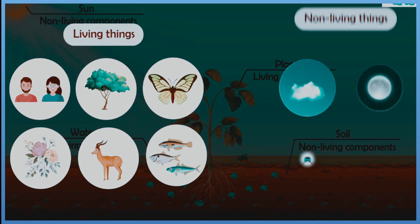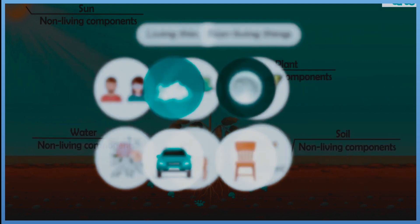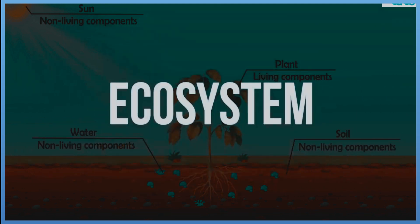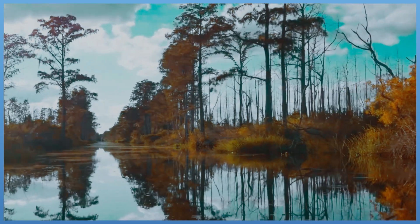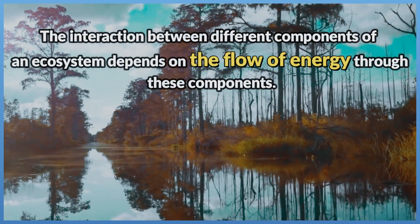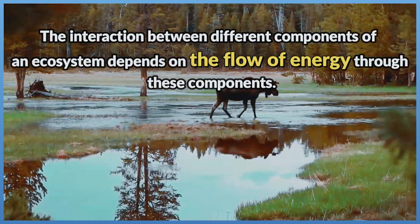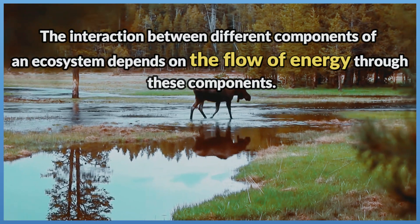An ecosystem is an area, or community, that contains living organisms and non-living things that interact with each other. The interaction between different components of an ecosystem depends on the flow of energy through these components.